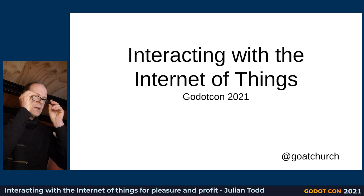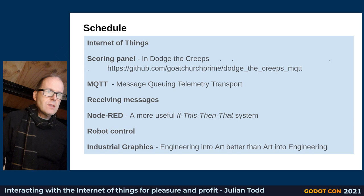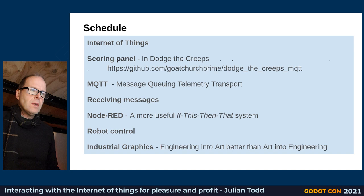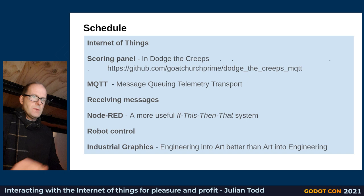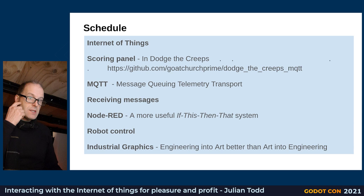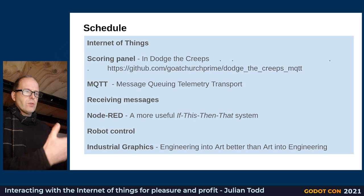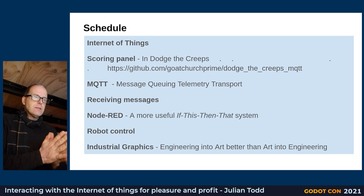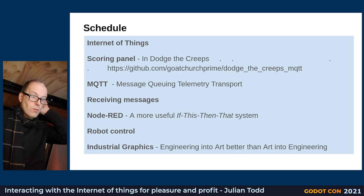This talk is about interacting with the internet of things using Godot. The schedule covers what the internet of things is, a demo with a scoring panel added to the Dodge the Creeps demo game using MQTT — a lightweight publish-subscribe system widely adopted in industry and home automation — how to receive messages back into Godot, Node-RED as a management tool, a robot demo, and a word about industrial graphics and what this means for engineering software.